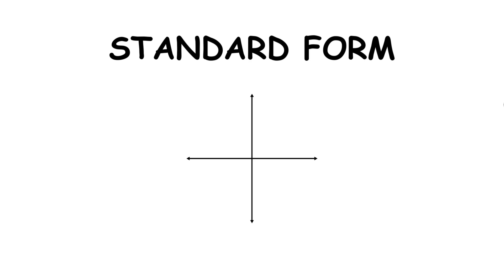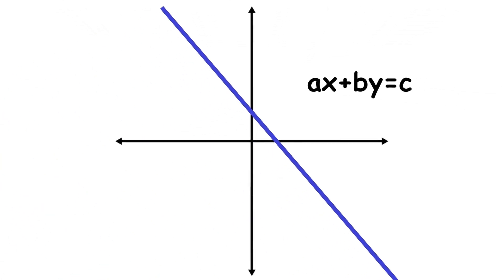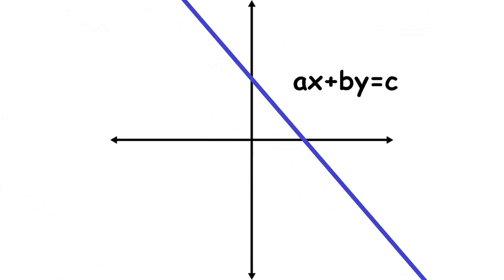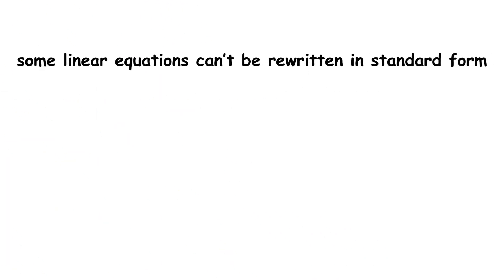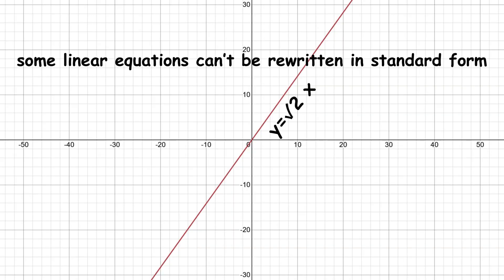The final common form is called standard form, which is ax plus by equals c, where a, b, and c are integers. This form separates out the variable terms from the constant term. However, note that some linear equations can't be rewritten in standard form, like y equals square root of 2 times x.